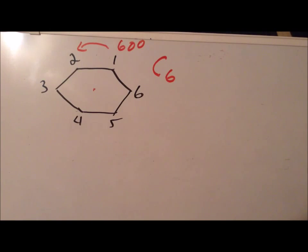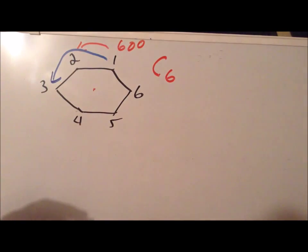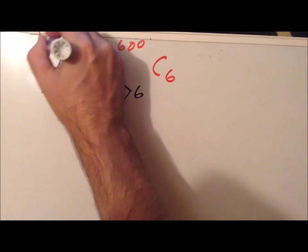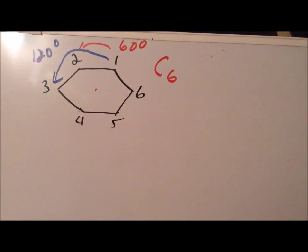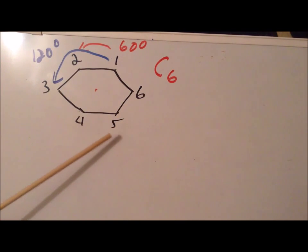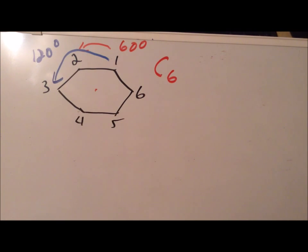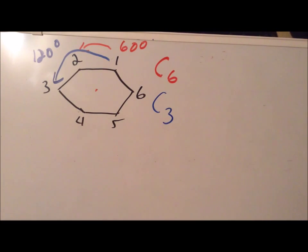We could also rotate by moving vertex 1 to 3 — skipping two positions — which gives a rotation of 120 degrees. This moves vertex 1 to 3, 2 to 4, 3 to 5, 4 to 6, and 5 to 1, while the center point remains invariant. The word 'invariant' means that a point does not move. This 120 degree rotation tells us we have a C3 operation. So the hexagon has both C6 and C3.